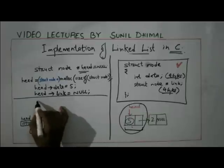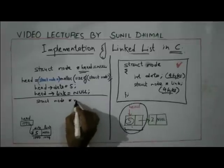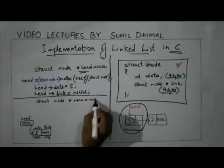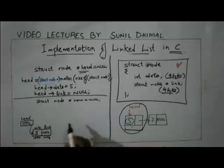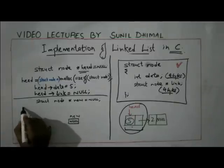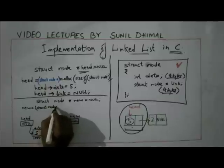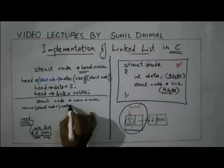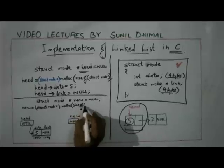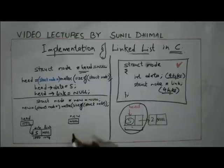Now I need to create a second node. I declare another pointer: 'struct node *new = NULL'. Then I allocate memory for it: 'new = (struct node *) malloc(sizeof(struct node))'. This creates a new memory block — suppose its starting address is 2000, with data at 2000 and link at 2004. The pointer 'new' now holds the value 2000 and points to this second node.